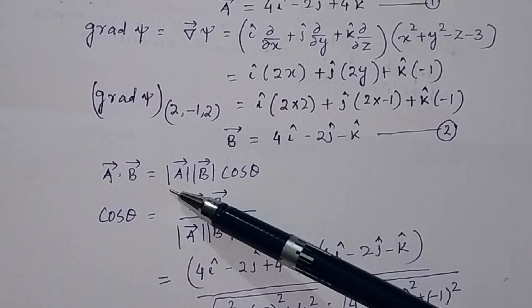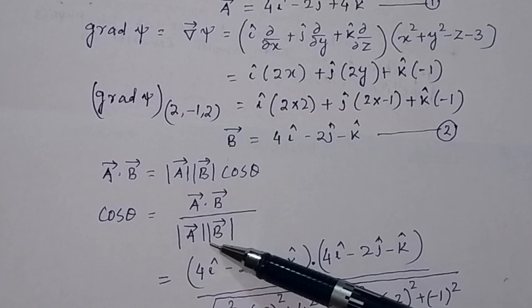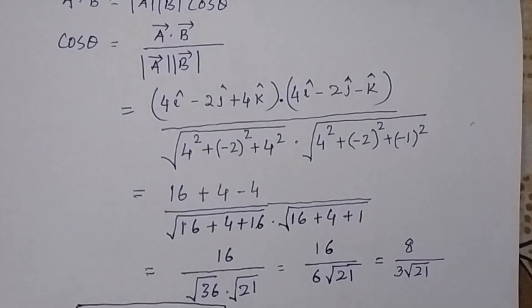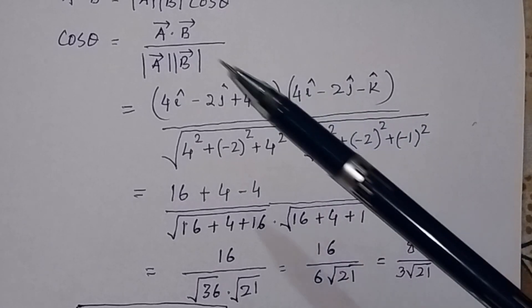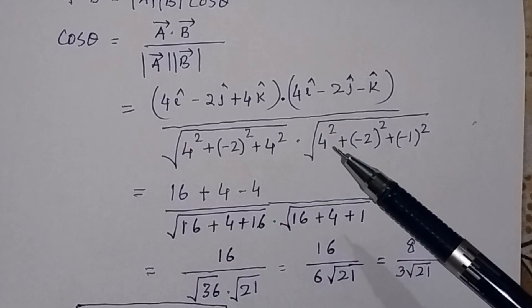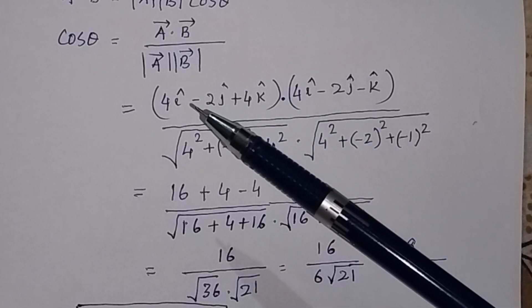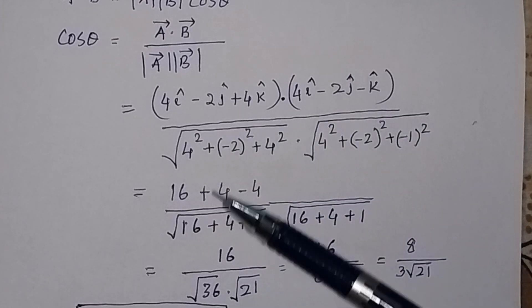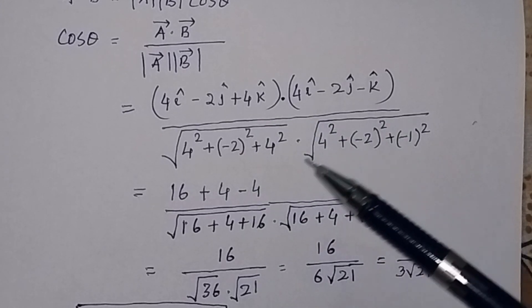Using the formula: cos θ = A · B / (|A| |B|). Taking the dot product of A and B — only i·i, j·j, k·k terms exist — we get (4)(4) + (−2)(−2) + (4)(−1) = 16 + 4 − 4 = 16. The magnitude of A = √(4² + (−2)² + 4²) = √36, and magnitude of B = √(4² + (−2)² + (−1)²) = √21. So cos θ = 16 / (√36 · √21).